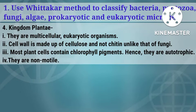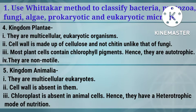Continuing with Plantae: most plant cells contain chlorophyll pigments, hence they are autotrophic; they are non-motile. Fifth kingdom, Animalia: they are multicellular eukaryotes; cell wall is absent in them; chloroplast is absent in animal cells, hence they have a heterotrophic mode of nutrition.